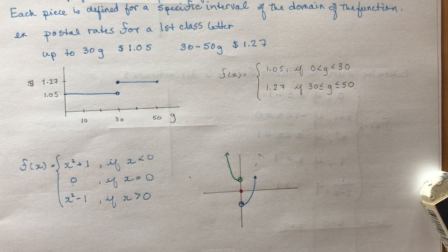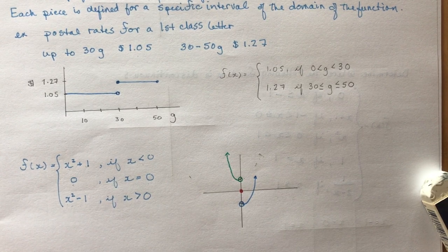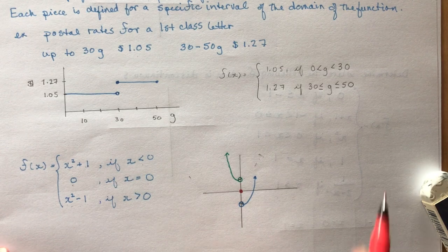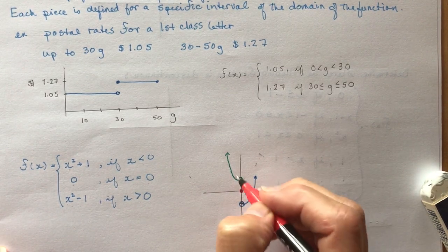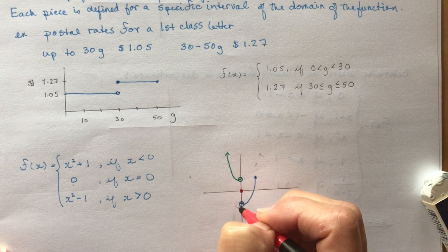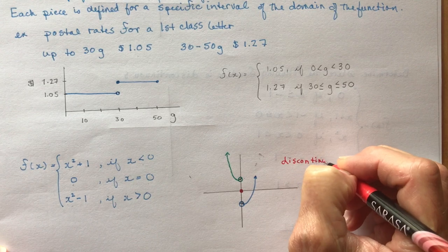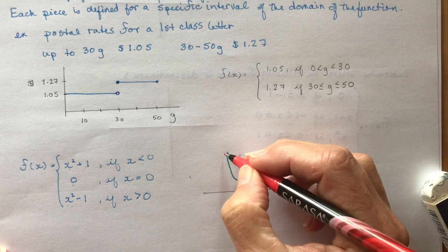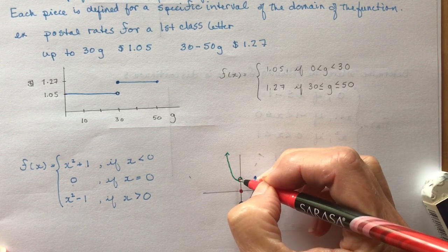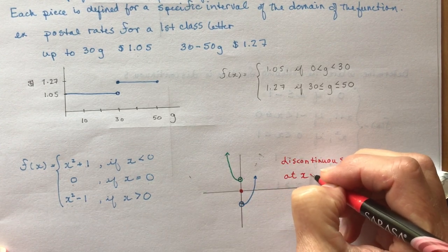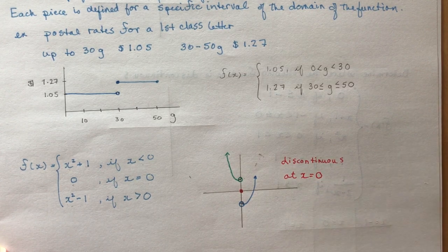So there's your piecewise function. The question is: is this function continuous? A continuous function means you can draw it without lifting your pencil. In this case that's not true — the function is discontinuous at x = 0. It's continuous up to that point and after, but discontinuous at x = 0. That's all you would have to say when asked.